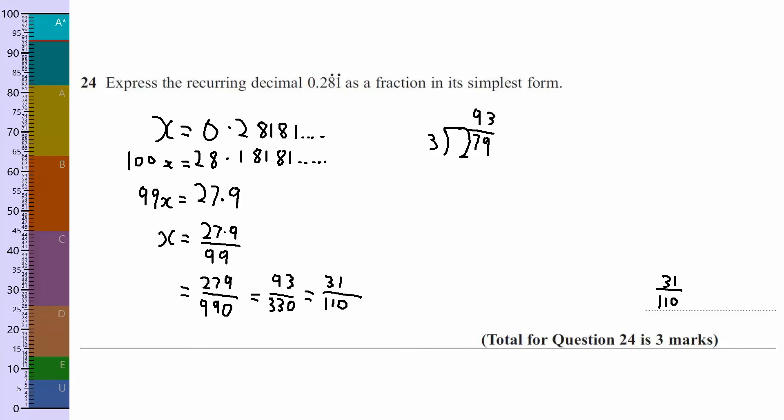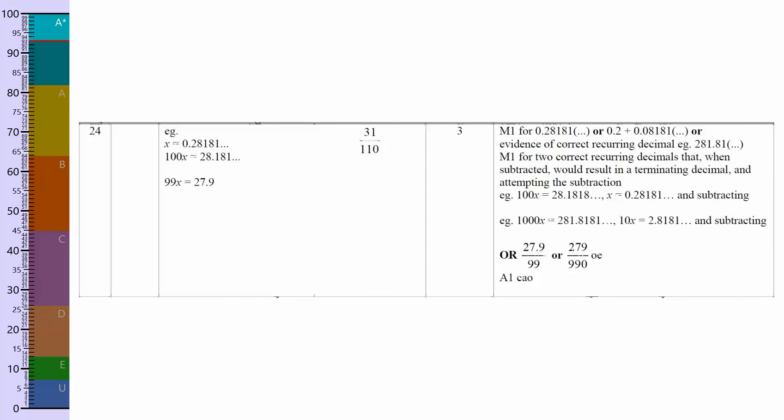Okay, let's have a look at the mark scheme. And you can see the methods I've just shown there, down here. But there are other methods, so you can see here they've done the same. They've split it up into 0.2 plus 0.081 recurring. And they've done that to get the same answer. That's it.